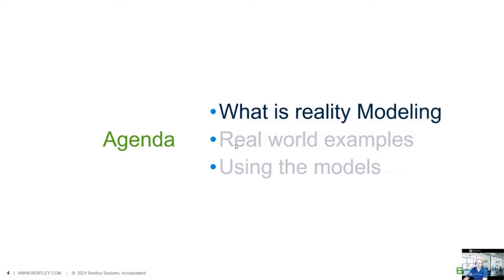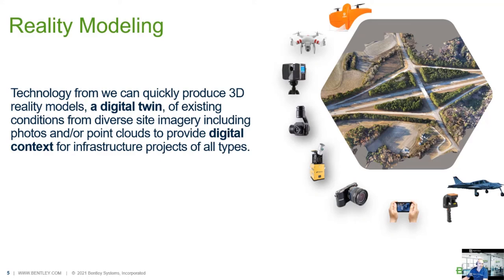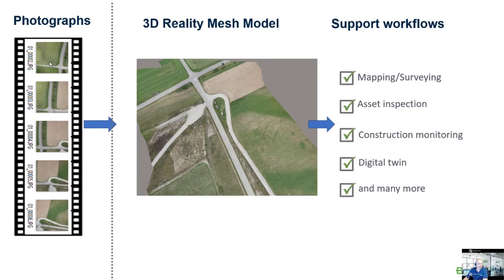So what is reality modeling? It's a technology where we can quickly make 3D models from photos — essentially a digital twin. It can be captured from a fixed-wing drone, normal drones, and not only photogrammetry but also point cloud and mobile point cloud scanners, from a plane down to handheld scanners. There's a whole range of input types. We put the photos in the software, get a mesh model out, and then use it in different workflows.